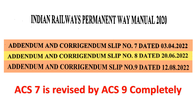After issue of CS 6, ACS 7, 8 and 9 have been issued in April 2022, June 2022 and August 2022 respectively. One important thing to remember is that ACS 7 is revised completely by ACS 9. So in this video, we will read the latest data with ACS 9.